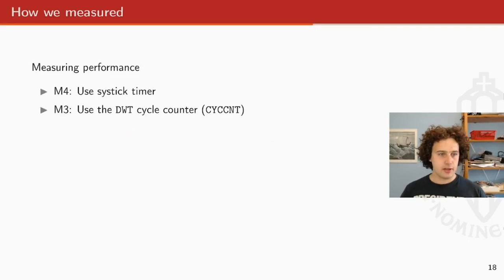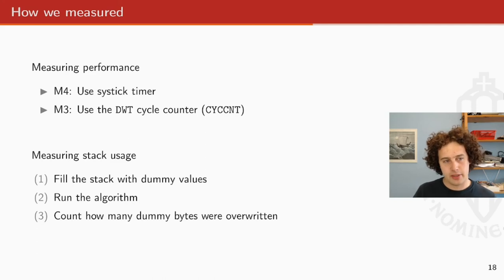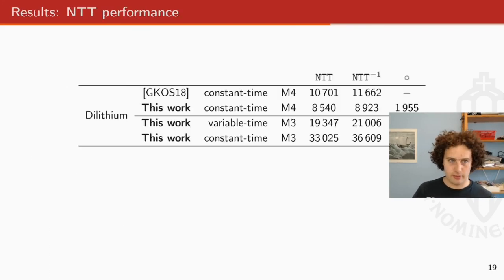So after implementing all this, these are our results. We measured using on the M4, we measured using the systick timer. The M3, we used the DWT cycle counter. And how we measured stack was we filled the stack with dummy values. We run the algorithm and we count how many of these dummy values were overwritten. For the NTT, we kind of sped up a little bit compared to the previous work. And we see that the constant time M3 NTT is like three times as slow as the M4 implementation. And the variable time NTT performance is about two times as slow.